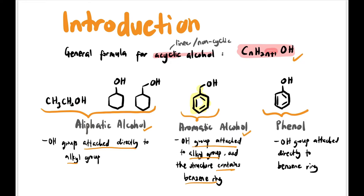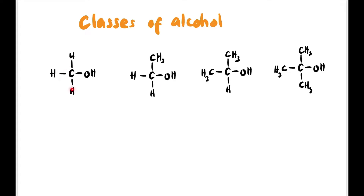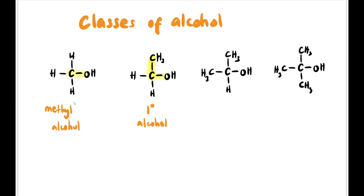Alcohol can be divided into four classes. The first, methyl alcohol, is where the OH group is attached to a carbon with no other hydrogens — only other carbons. Next is primary alcohol, where the OH group's carbon is attached to one other carbon. Secondary alcohol is where that carbon is attached to two other carbons. Tertiary alcohol is where the carbon is attached to three other carbons.